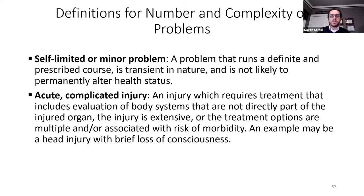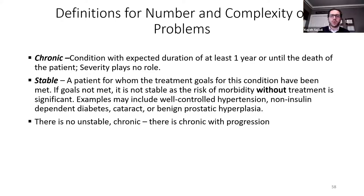A chronic condition is defined as one with an expected duration of at least one year or until the death of the patient — it has nothing to do with severity, only duration. A stable condition — importantly — only refers to a problem for which the treatment goals have been met. If the patient has not met those goals, the condition is not deemed stable. The main difference between level four and level five visits with regard to a chronic illness with progression is the decision on whether hospitalization may come into play — level four does not consider sending the patient to the hospital, while level five does, though it doesn't mean you are actually sending them.